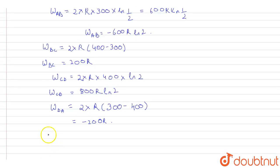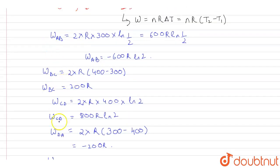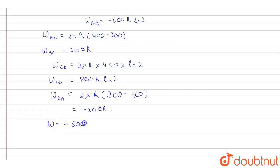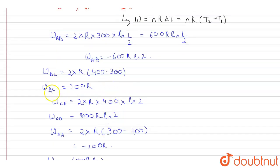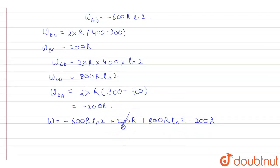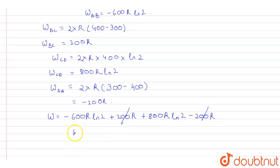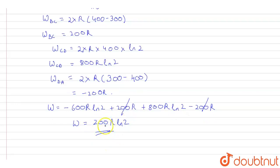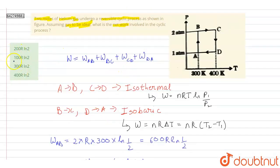Now summing all contributions: W = W_AB + W_BC + W_CD + W_DA = −600R ln 2 + 200R + 800R ln 2 − 200R. The 200R terms cancel, and (800 − 600)R ln 2 = 200R ln 2. Therefore the net work is W = 200R ln 2, and the correct option is option A.